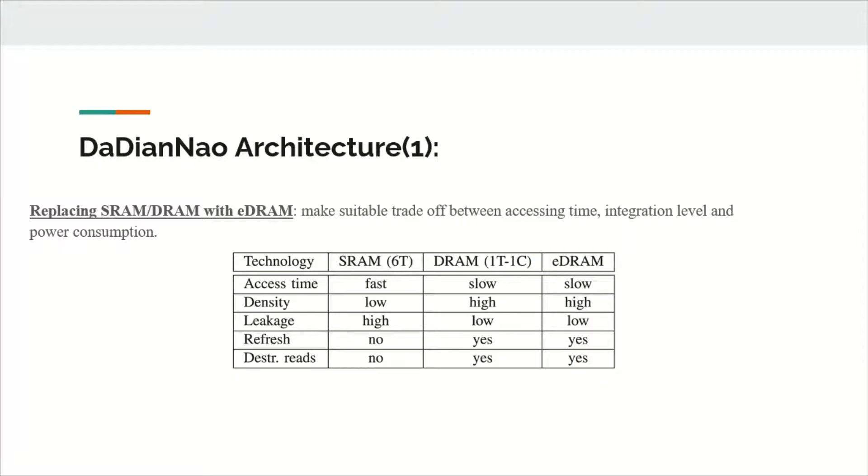Okay, lastly, the DaDianNao architecture. It consists of three key features. The first one is that it replaces SRAM and DRAM with embedded DRAM. While SRAMs are appropriate for caching purposes, they are not dense enough for such large scale storage. The storage density of embedded DRAMs is around three times higher than SRAMs or DRAMs.